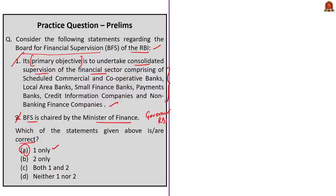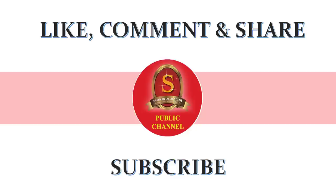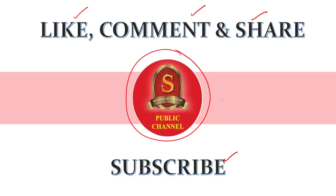Let us look at a mains question. The question is: the Jammu and Kashmir Reorganization Act of 2019 was brought to solve the internal issues of Kashmir and reduce the radicalization of Kashmiri youth — critically analyze. It is a 15-mark question to be answered in 250 words. With this, we come to the end of the analysis of all the news articles taken up for today's discussion and the practice questions discussion session. If you like the video, press the like button, comment and share, and do subscribe to Shankar IAS Academy YouTube channel for latest videos and updates. Stay focused and motivated, friends.